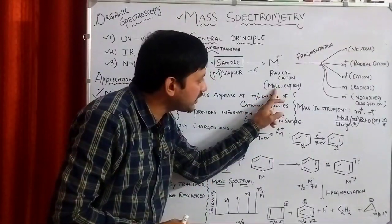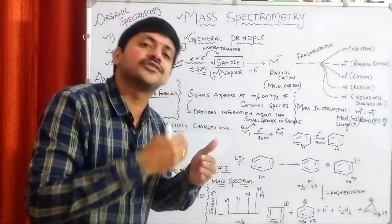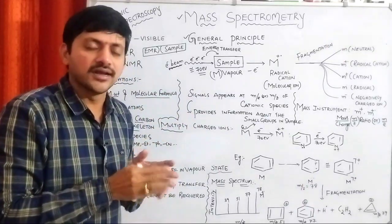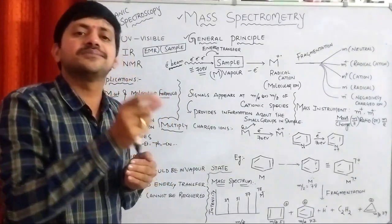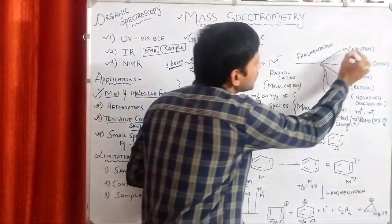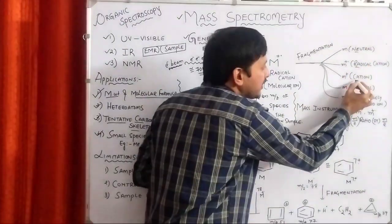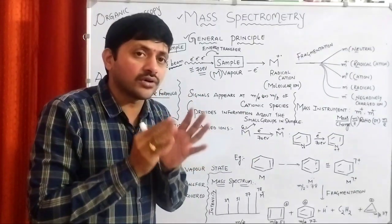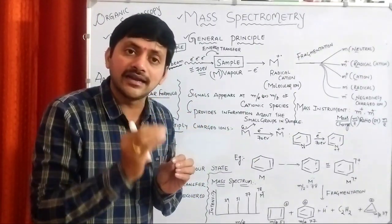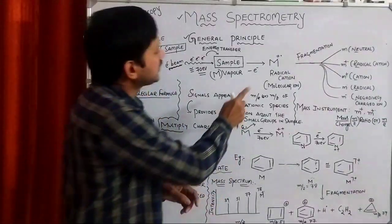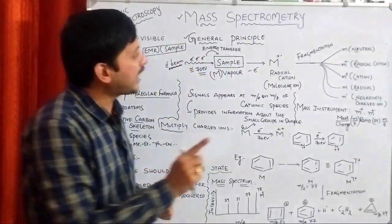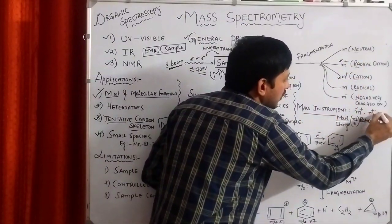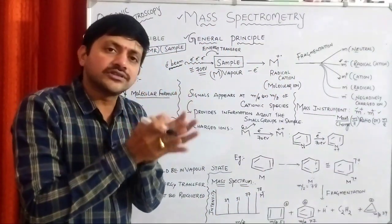By the removal of electrons we create a positively charged radical, commonly called a radical cation — also called the molecular ion. Whatever molecular ion is formed is then subjected to different kinds of cleavages, a process commonly called fragmentation. The fragmentation process leads to simple species called fragments. The fragments may be neutral, radical cation, simple cation, radical, or anion. But we must remember that mass spectrometry only identifies positively charged species — meaning the molecular ion, radical cation, and simple cation.